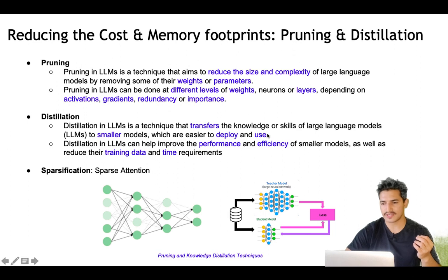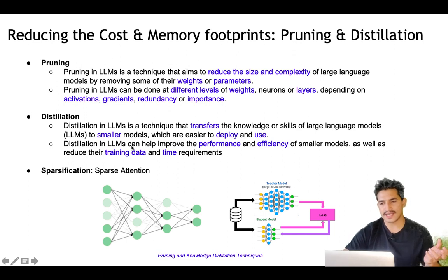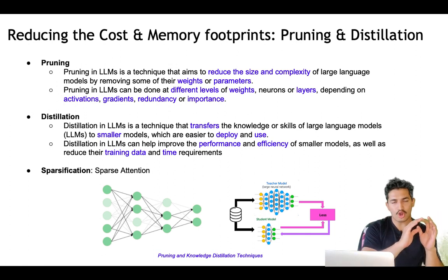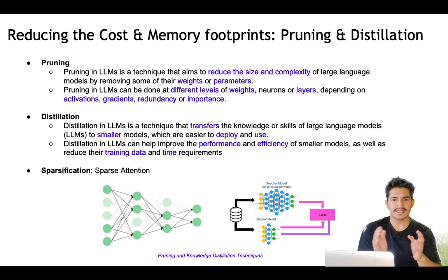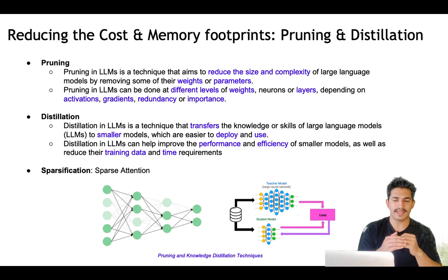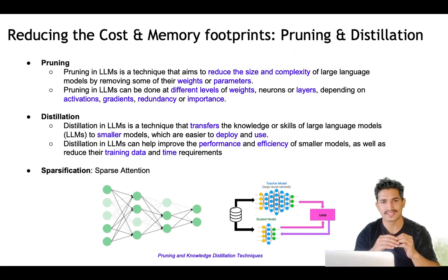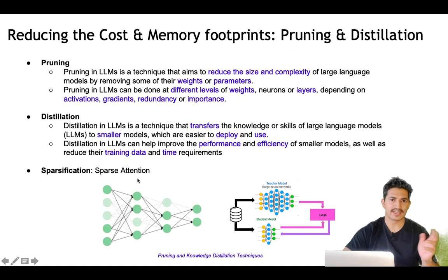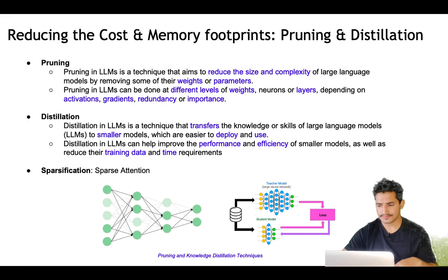Distillation in LLMs is a technique that transfers the knowledge or skills of a large language model into a smaller model that is easier to deploy and use. Distillation can improve the performance and efficiency of smaller models and reduce training data and time. There is a teacher model which is the large LLM, and we can still capture much of its accuracy in a smaller model using knowledge distillation training. Sparsification — or sparse attention — we have already seen in the context window section.